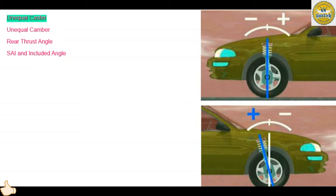If caster is unequal, one side is negative and the other side is positive, a pull condition can occur. The vehicle will pull to the side that has the least amount of positive caster.